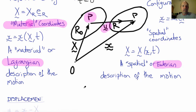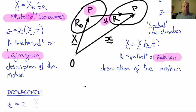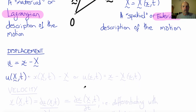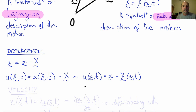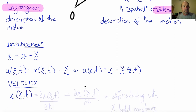We can now write equations for quantities. The displacement vector U is little x minus big X, which means we could write it in the Lagrangian sense as x(X, t) minus X, or in the Eulerian sense as little x minus X(x, t). They're the same quantity — it's just whether the coordinates are reference coordinates or current coordinates.